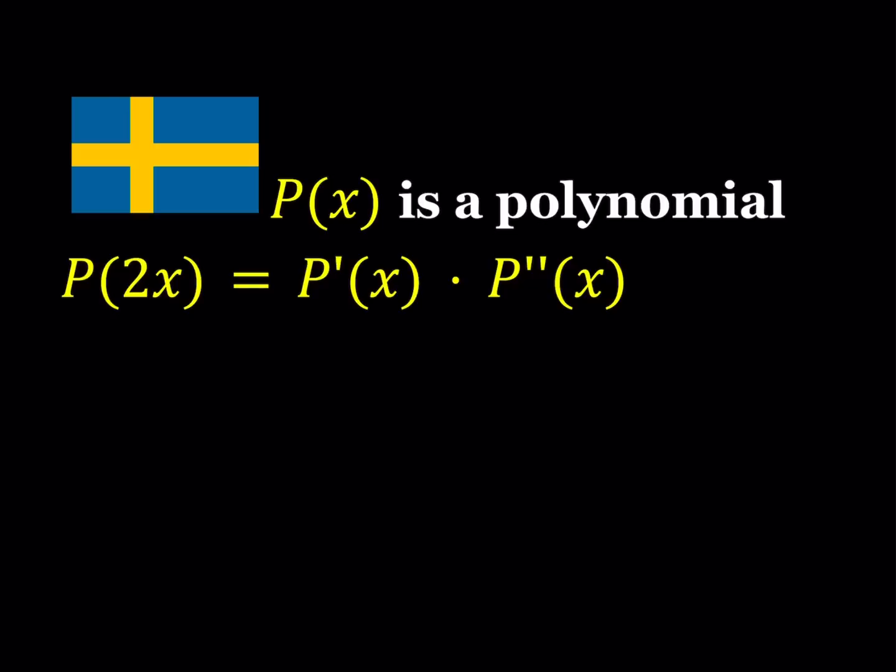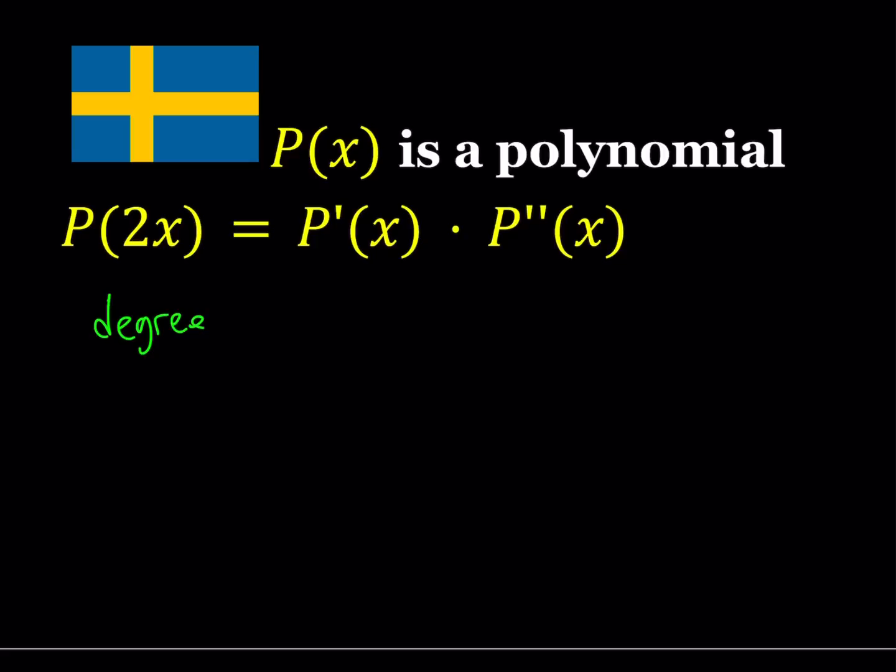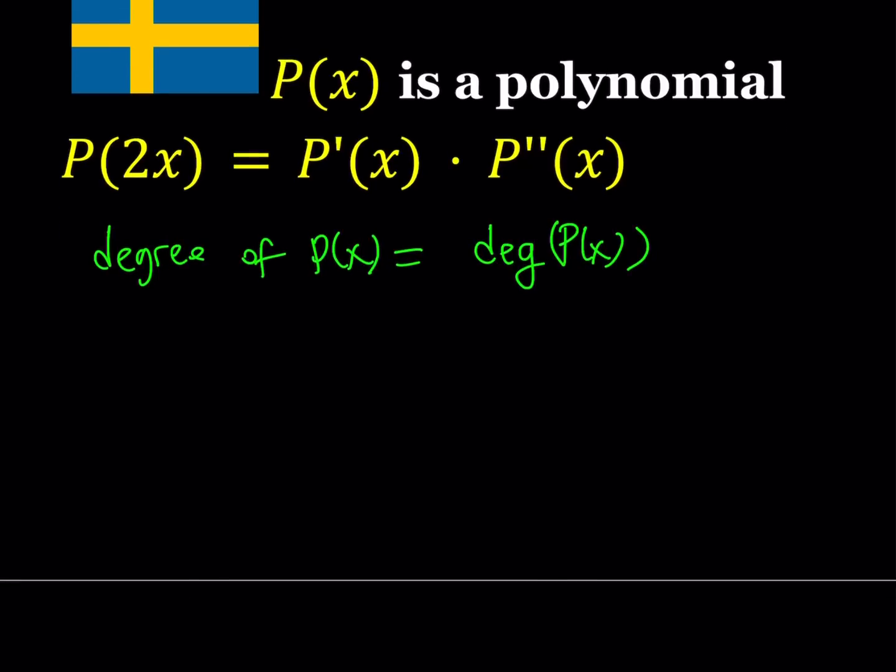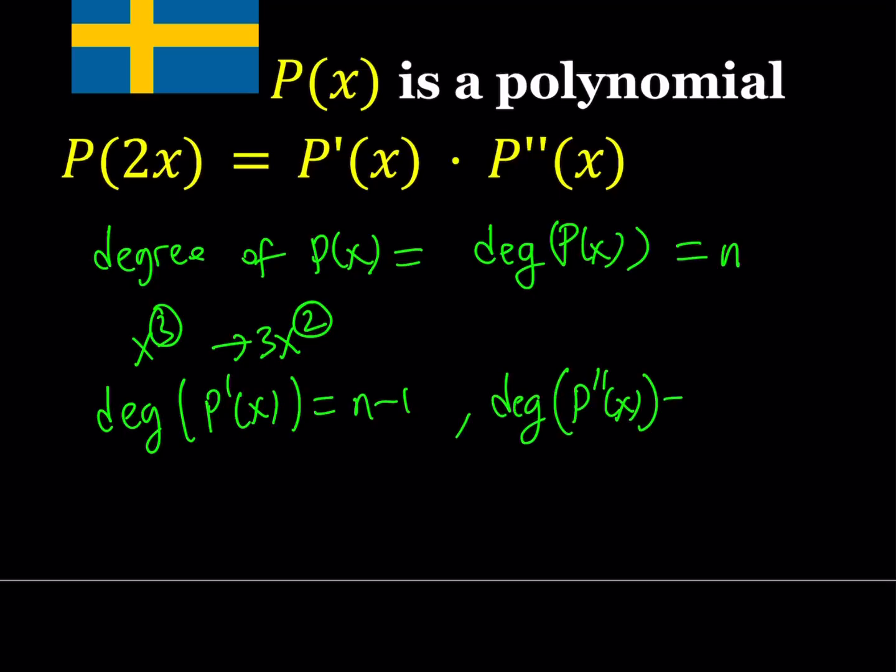We're going to start by looking at the degree of P(x). For that let's use a special notation: degree of P(x), let's just use deg as notation. So deg P(x) represents the degree of P(x). If the degree of P(x) is n, then the degree of P(2x) is also n because replacing x with 2x does not change the degree. When you differentiate a polynomial you reduce the degree. If you have x cubed, when you differentiate it becomes 3x squared, so the degree drops by 1.